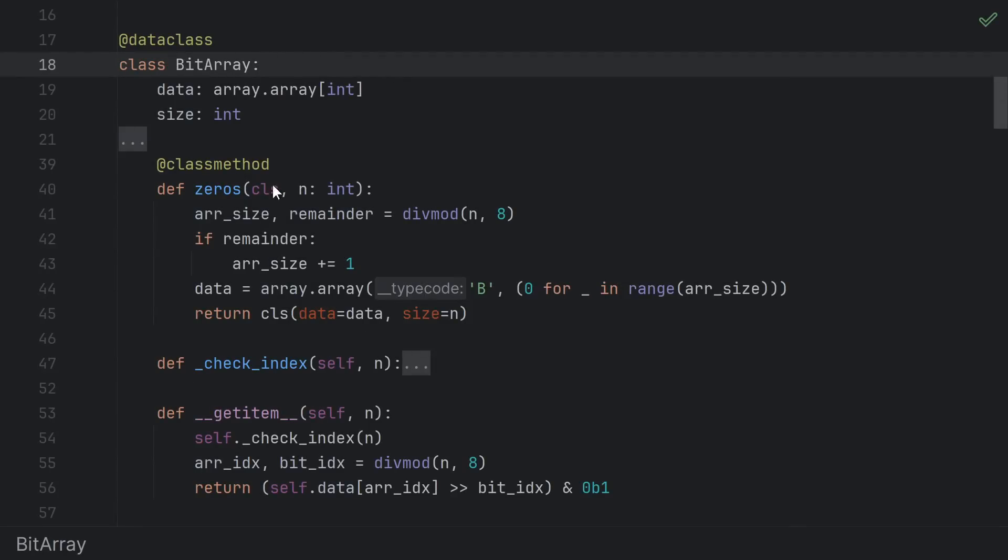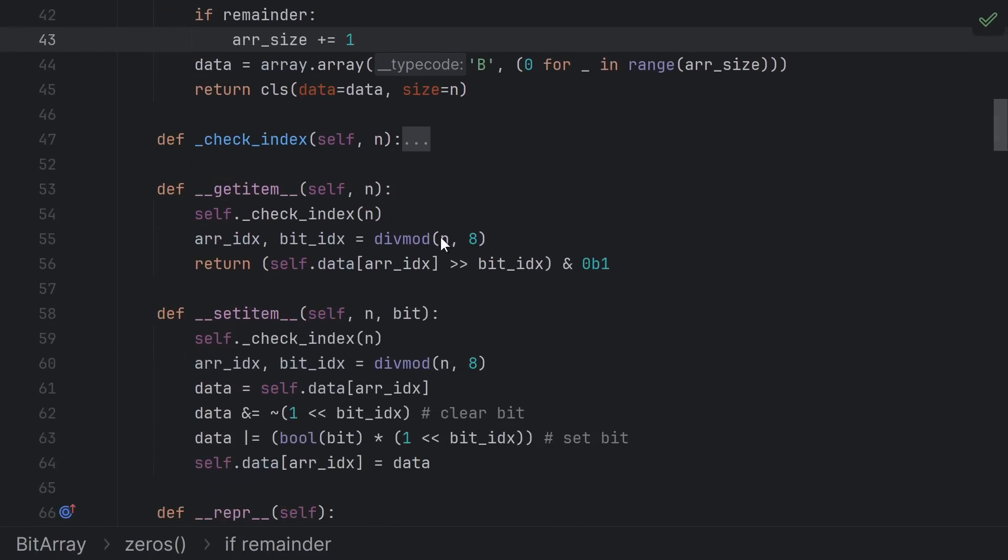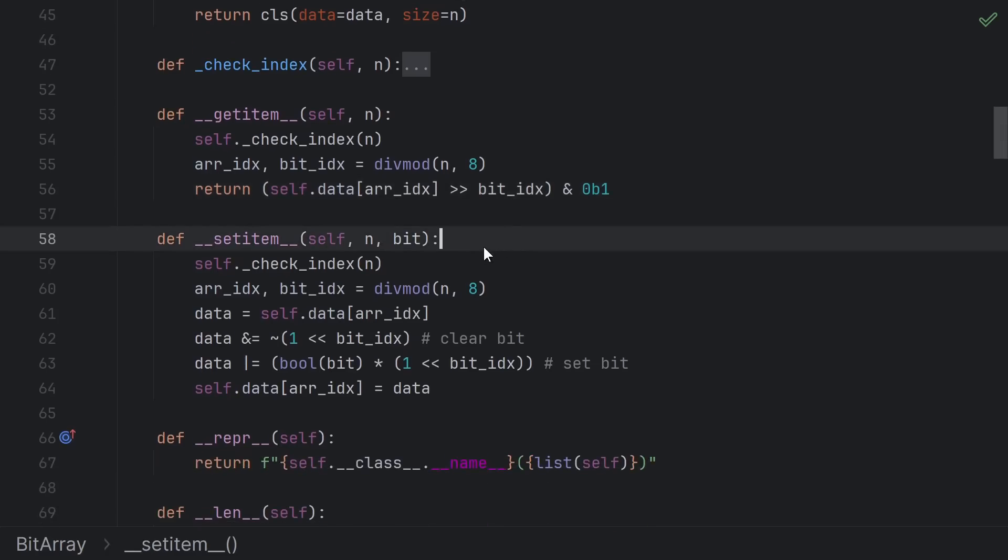We can implement a bit array like this. Have it hold the data, which is made of an array of bytes, and a size. We keep track of the size separately because we might want to store a number of bits that's not a multiple of 8, so the array might be a few bits longer than the size. We can construct an array of zeros like this, allocating a byte for every 8 bits rounded up. Getting a bit is just calculating which byte and which bit within the byte using div mod, then grabbing that index and masking out the bit we want. Setting a bit is similar. This first expression we do a bitwise and to clear the bit, then the second one we do a bitwise or to set the value we want.